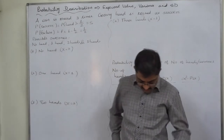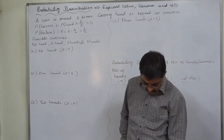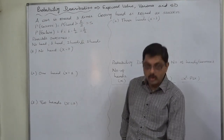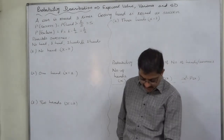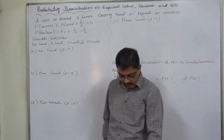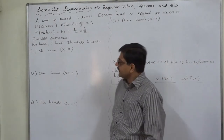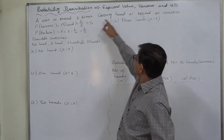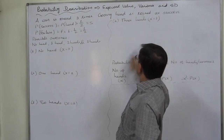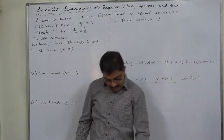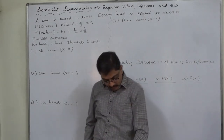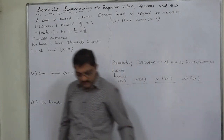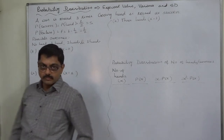The problem is to obtain the probability distribution of the number of heads in three tosses of a coin. A coin is tossed three times and getting a head is termed as success. Obtain the mean, variance, and standard deviation of the distribution.